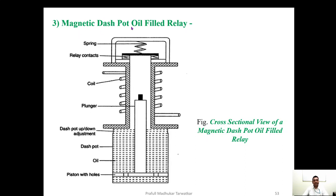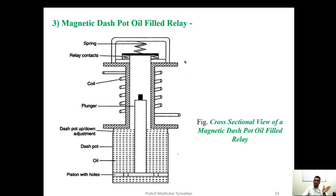The third type is the magnetic dashpot oil-filled relay. Here we have a plunger. When the current exceeds, the pressure inside the oil increases and the piston with holes moves upward, causing the plunger to come upward and hit the relay contact to open it. Initially the contacts are in a closed position, but when the plunger hits them they open, thus removing the faulty part from the rest of the healthy system.